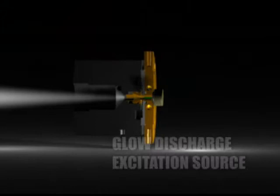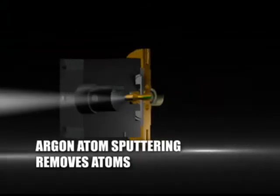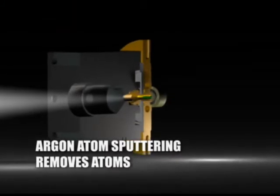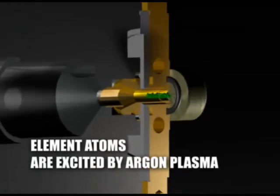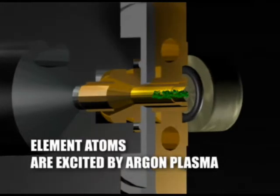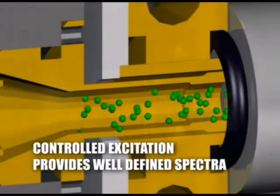Glow discharge excitation is a sputtering process controlled by the lamp voltage, the plasma current, and the argon pressure in the lamp. These conditions create an argon plasma where sample sputtering can occur. Argon atoms sputter atoms from the sample surface. Sample atoms in the plasma are excited by the argon plasma and emit characteristic spectra of each sample element.